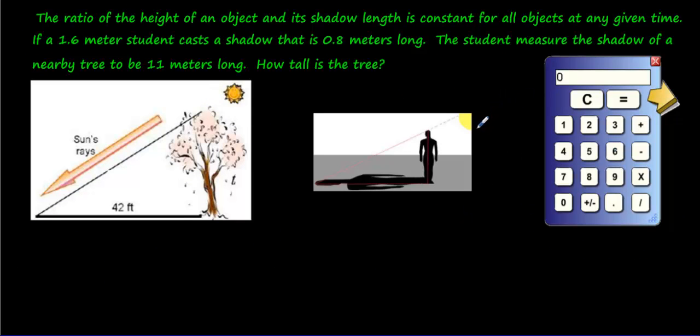And the last question. The ratio of the height of an object and its shadow length is constant. What does constant mean? It means the same, it doesn't change. It's always the same. Kind of like ratios, right? The balance is always the same. For all objects at any given time. So it doesn't matter if you're a tree or a man. The ratio is always the same.